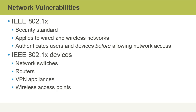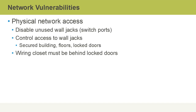IEEE 802.1x devices include things like network switches, routers, VPN appliances, and wireless access points. On the physical network access side, we should be disabling unused wall jacks which connect to switch ports, and we should control access to wall jacks even beyond MAC address filtering. Wall jacks should only be available within a secured building or floor with restricted access, or even behind locked doors. This, in conjunction with disabling unused switch ports and MAC filtering, adds to our layered security defenses.